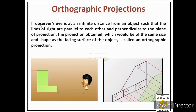The definition is: if the observer's eye is at an infinite distance from an object such that the lines of sight are parallel to each other and perpendicular to the plane of projection, the projection obtained — which would be of the same size and shape as the facing surface of the object — is called an orthographic projection.